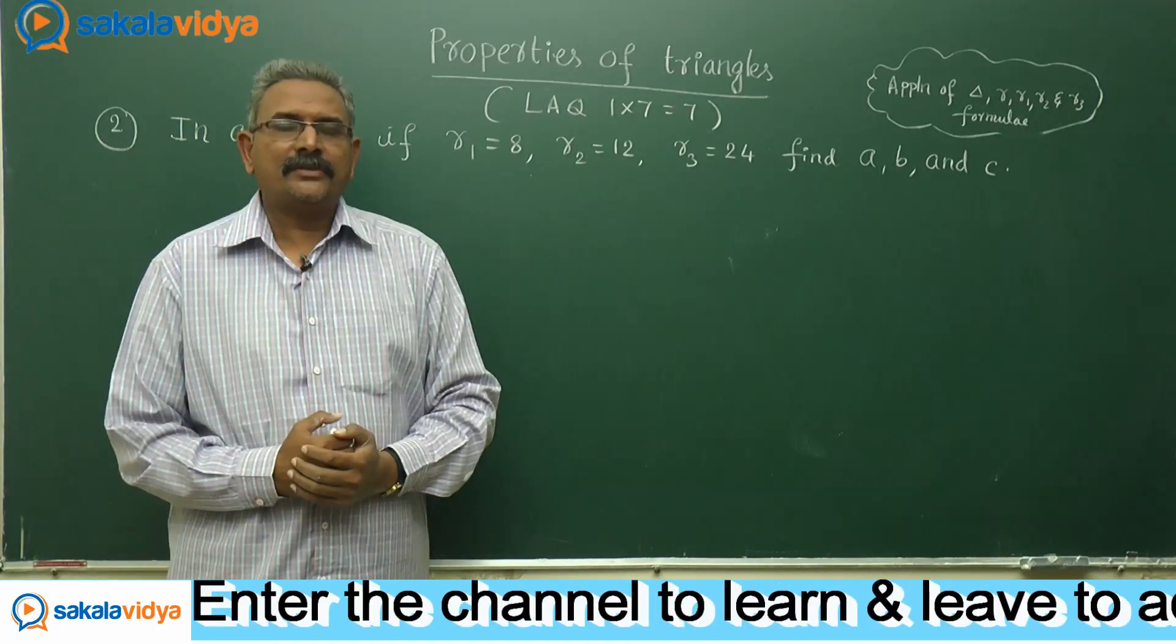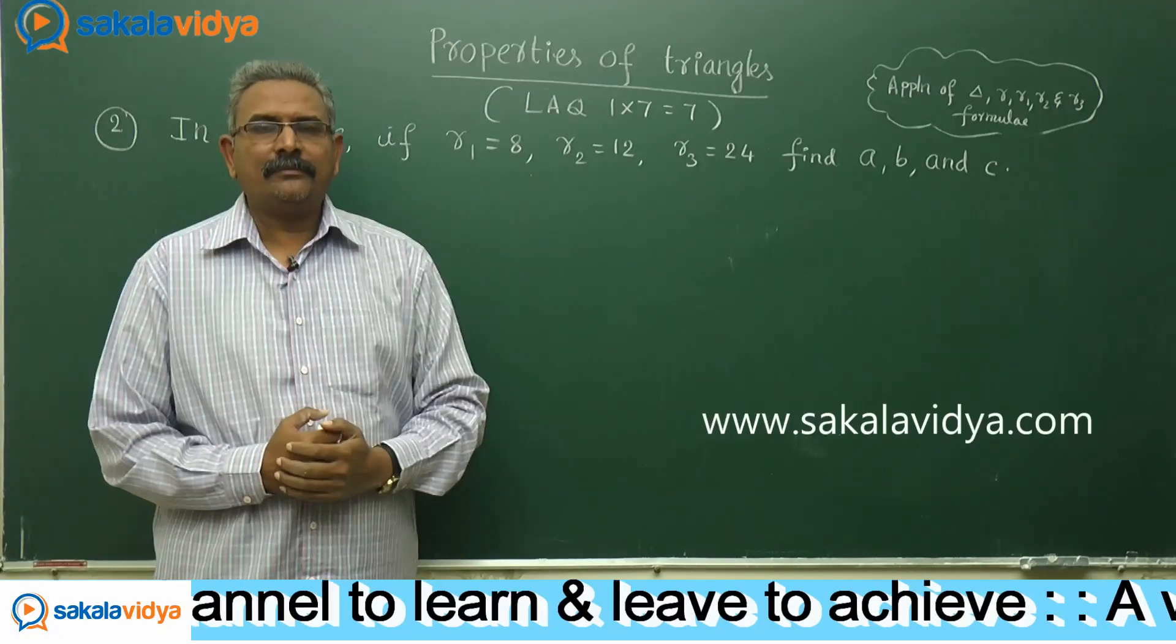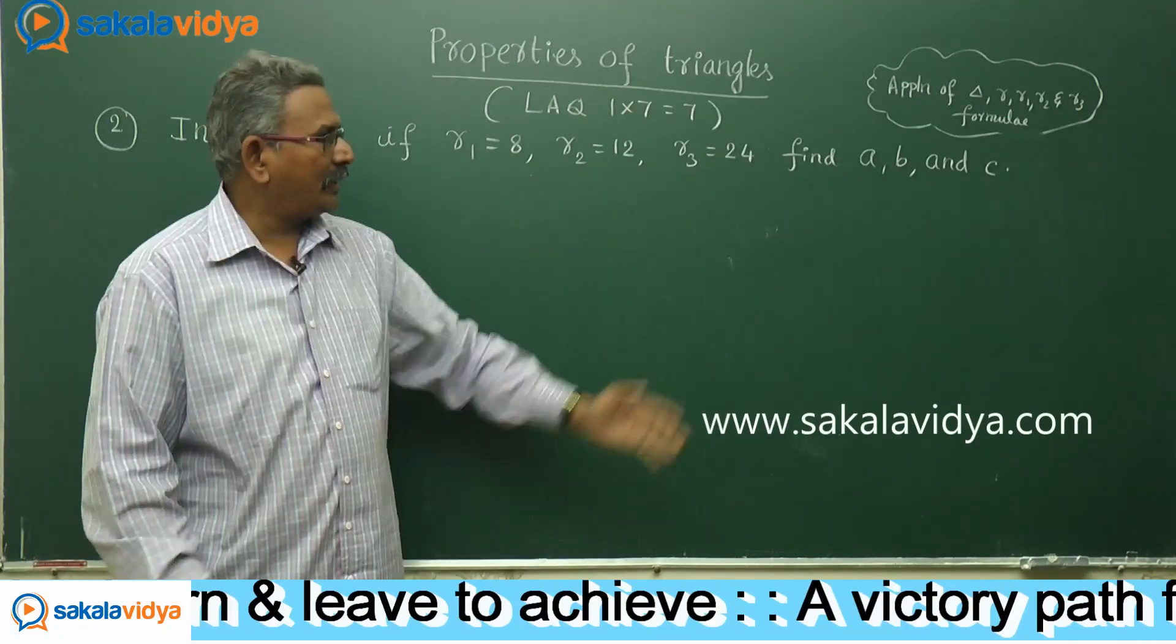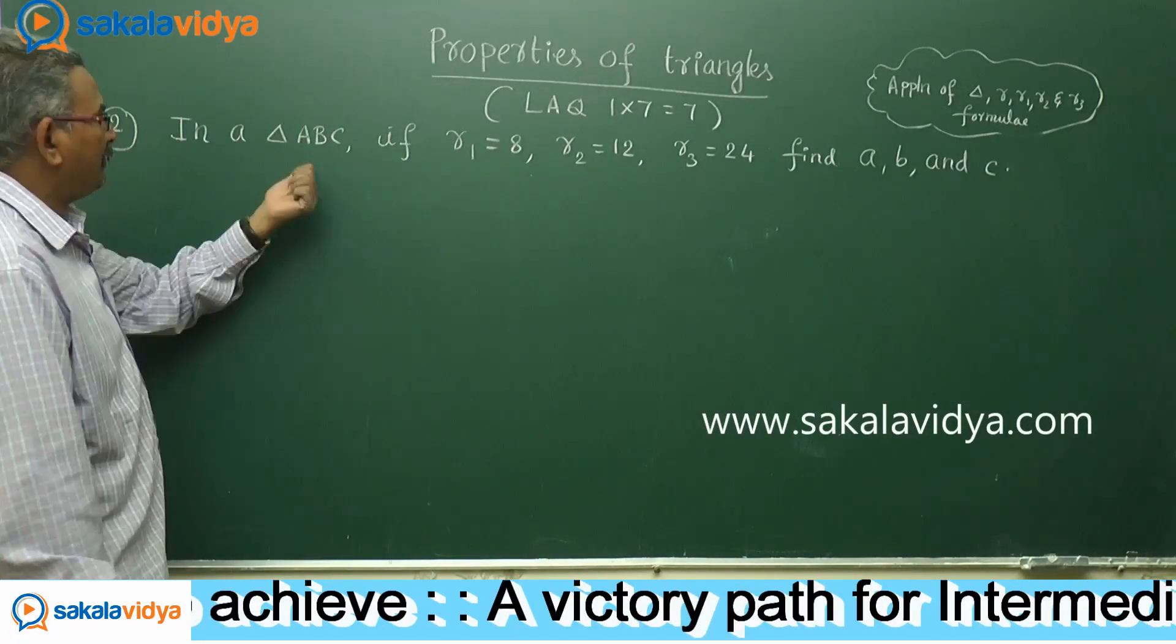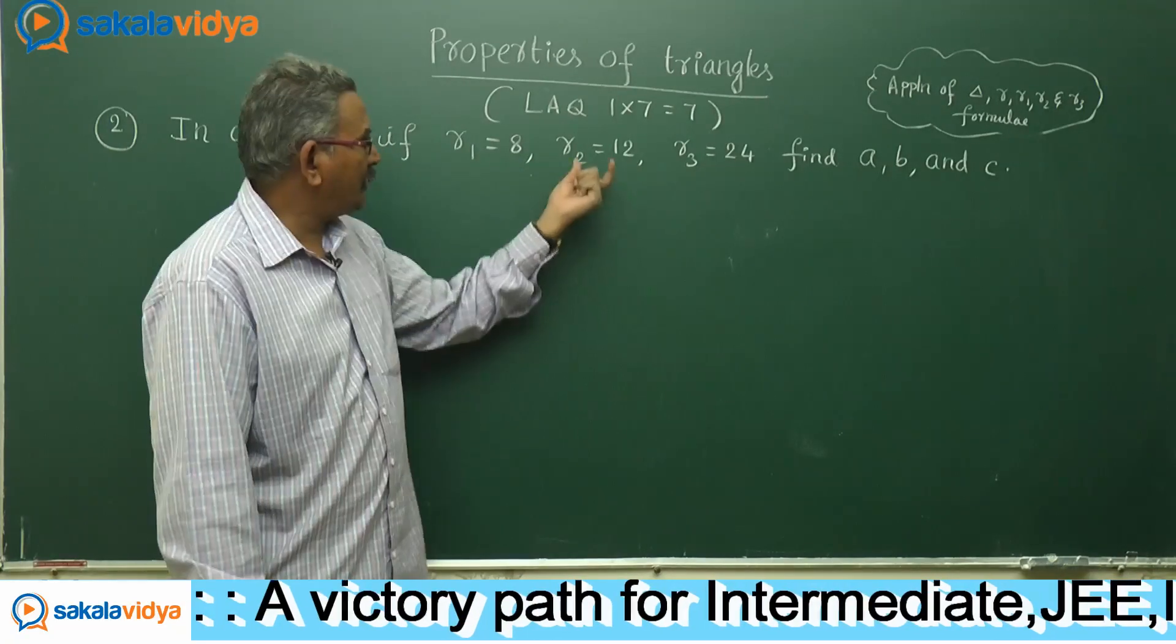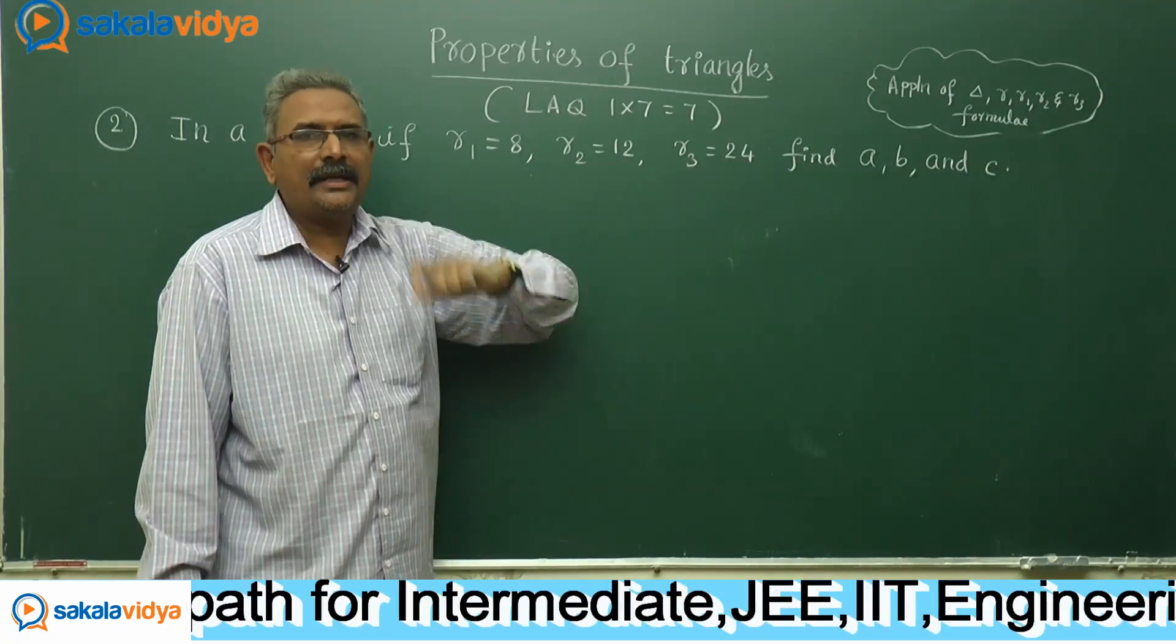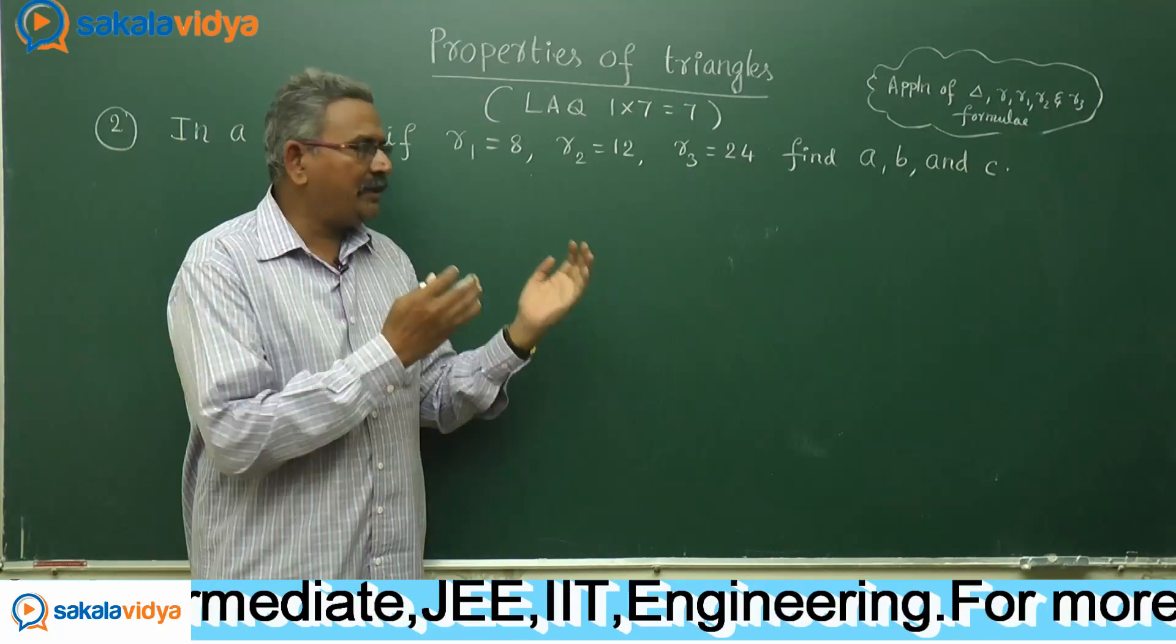After that, we shall make a plan. In order to solve a problem, first let us make a plan. After that, we have to execute it to arrive at the solutions. In a triangle ABC, if R1 equals 8, R2 equals 12, R3 equals 24, we need to find out the elements of the triangle, that is the sides of triangle ABC.